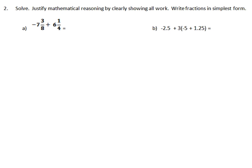Next, number 2. We're going to solve all of these problems involving rational numbers — fractions, decimals, integers — and we're going to be sure to always use order of operations if there's a choice. For part A, we're going to take both of these mixed numbers and change them into improper fractions. To do that, I'm going to multiply 7 times 8, which is 56, plus 3, which is 59. So negative 7 and 3 eighths is the same as negative 59 eighths.